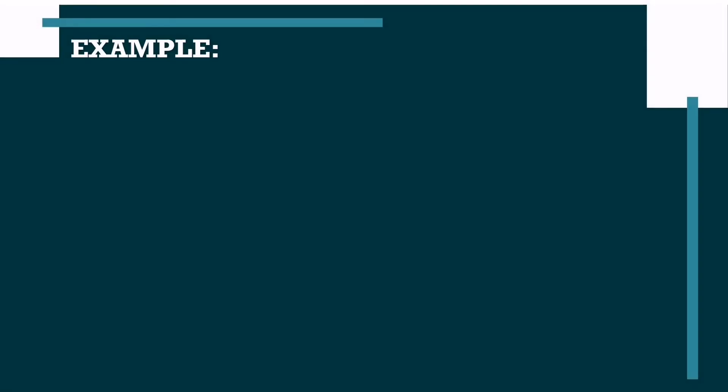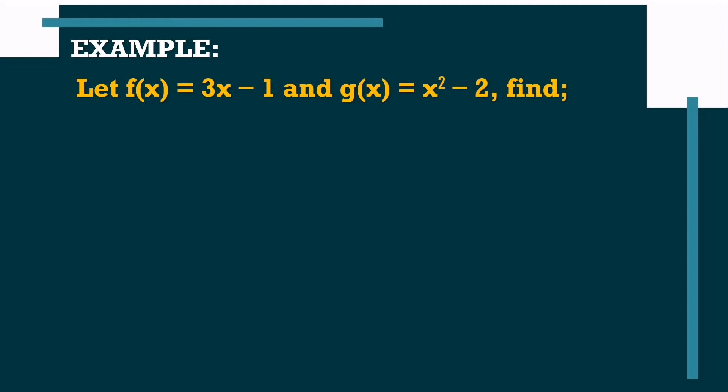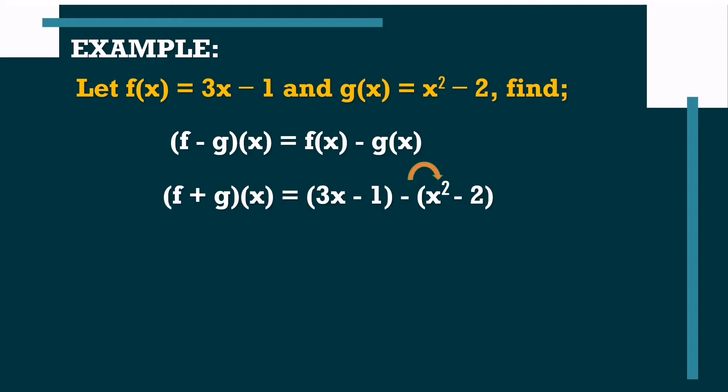Subtracting functions follows the same process. So, we write f minus g of x is equal to f of x minus g of x. Substitute the given values of f of x and g of x. Now, we need to apply the rule in subtracting integers — the minus sign will become a plus sign and the signs of the subtrahend will change. What I do to make it easier is distribute the minus sign to the subtrahend. So, negative times positive x squared becomes negative x squared, and negative times negative 2 becomes positive 2.